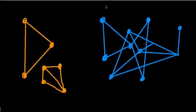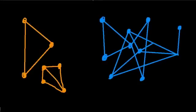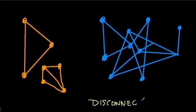In this video, we're looking at what are referred to as disconnected graphs. There are two graphs up here — the orange graph is one complete graph, and this bluish graph is another.